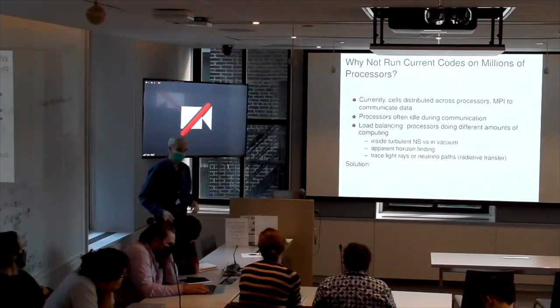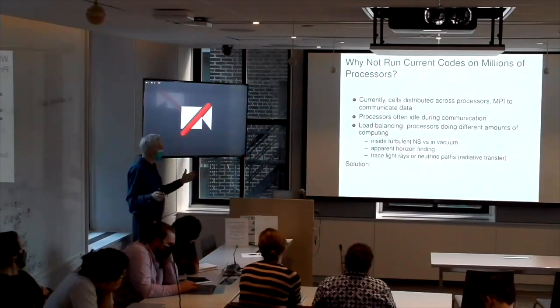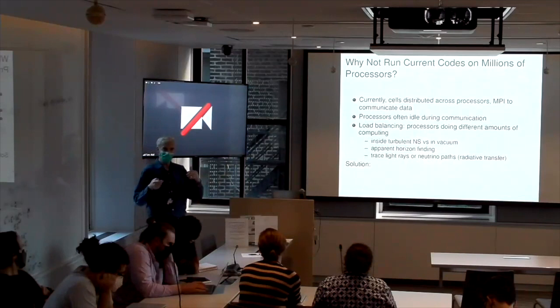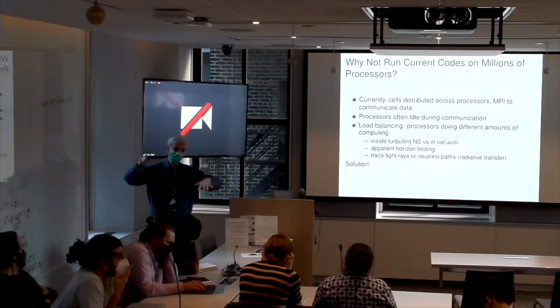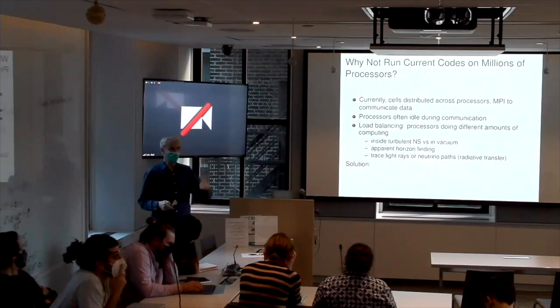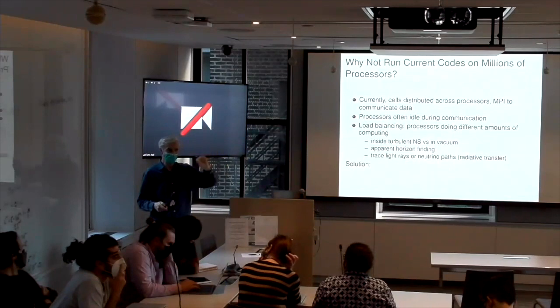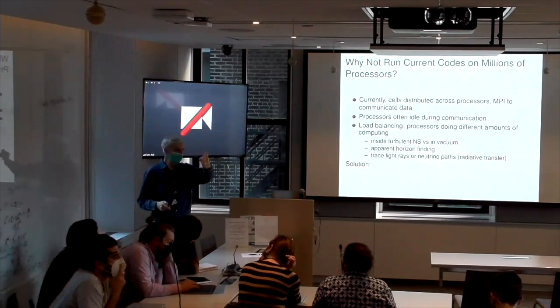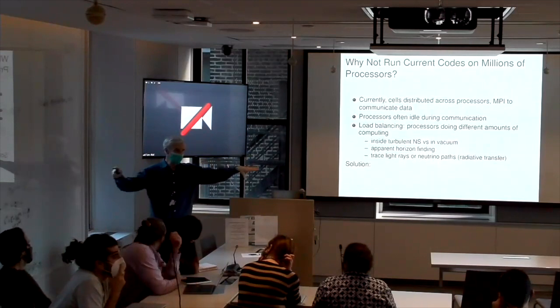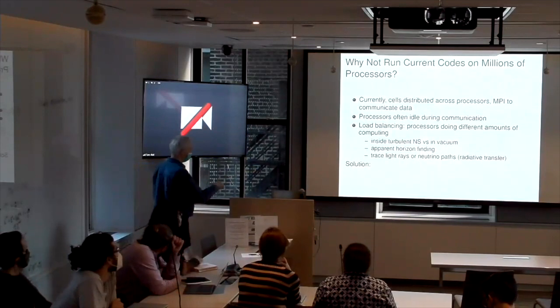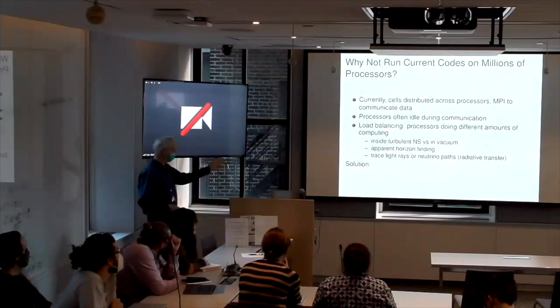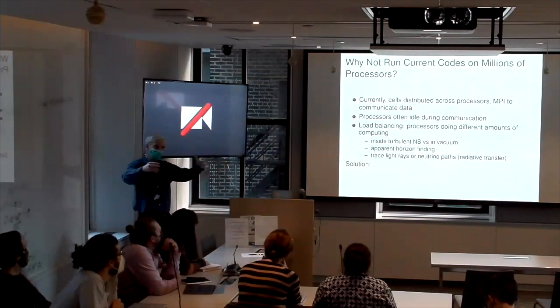This is what typically happens. So when we profile our SPECT code, and we have a particularly bad domain distribution, the top process in terms of CPU time can be MPI wait, which is MPI telling you nothing has happened. That's bad.